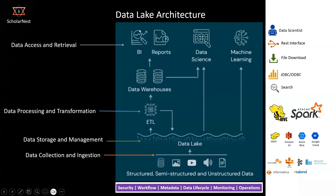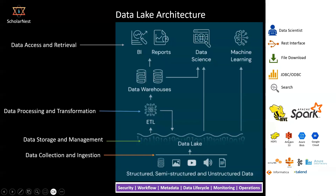This is how a data lake architecture looks — data is stored in the data lake. If you are working on the Hadoop platform, it is HDFS. If you are working on the cloud platform, it could be Amazon S3, Azure Blob, or Google Cloud. Storage is offered by these options and you will be using one of them to build your data lake platform.